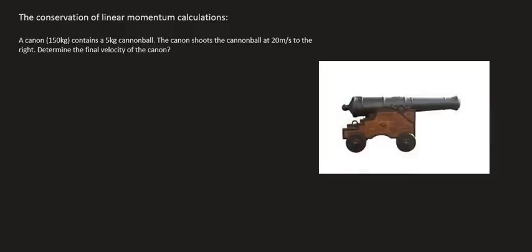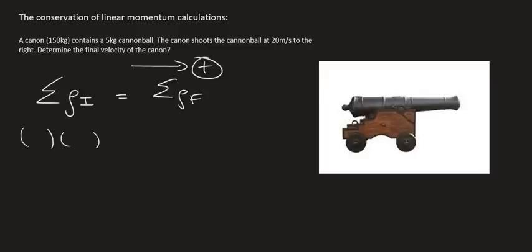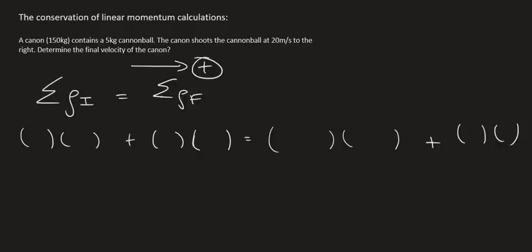So we can use our momentum formula. We can say that the sum of the momentum initially is equal to the sum of the momentum final. We can choose the direction as positive. We then open up our four brackets. And then what we can do is we'll have the mass of, let's call the cannon A and we'll call the cannonball B. So that'll be MA, VA, and that is going to be initial. Then M of B, velocity of B, initial.